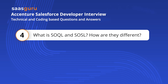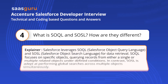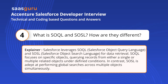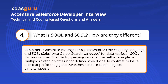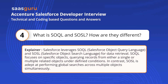Question 4: What is SOQL and SOSL? How are they different? Salesforce leverages SOQL (Salesforce Object Query Language) and SOSL (Salesforce Object Search Language) for data retrieval. SOQL focuses on specific objects, querying records from either a single or multiple related objects under defined conditions. In contrast, SOSL is adept at performing global searches across multiple objects simultaneously.